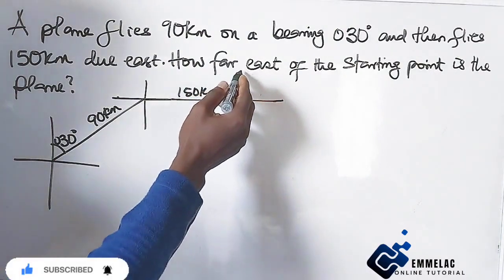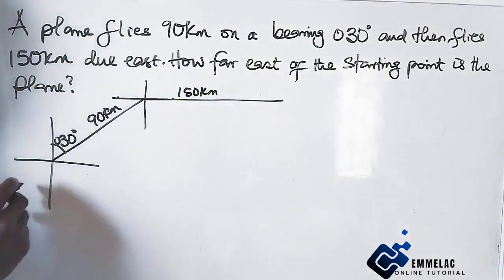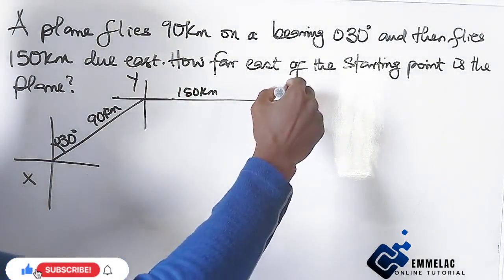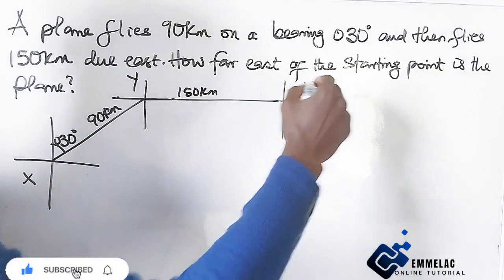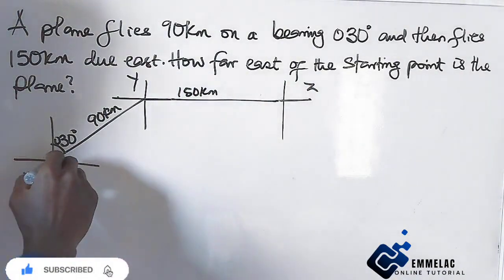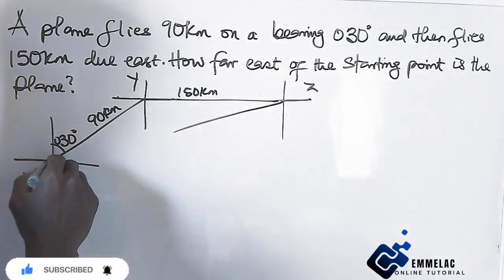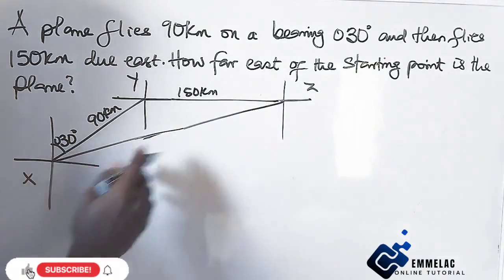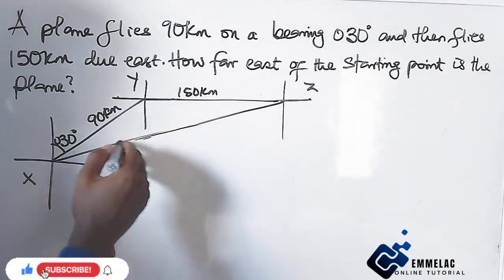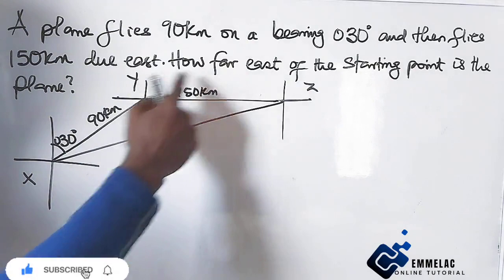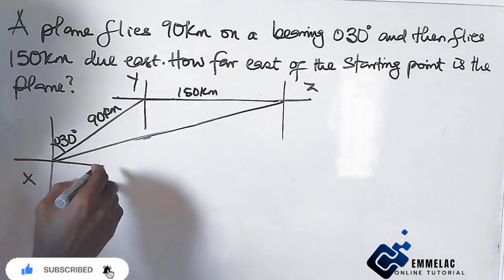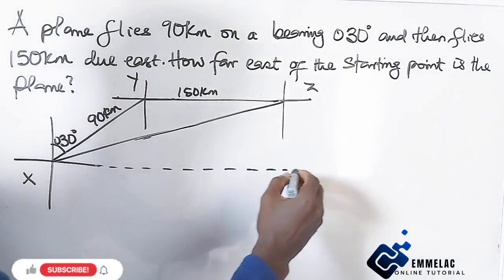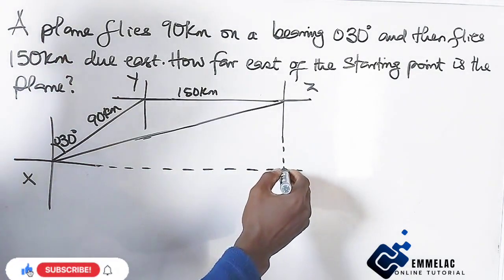Now how far east of the starting point? Here is the starting point. Let us give this one X, I give this one Y, and let us give this one Z. So our starting point, we connect this down to this. Here is our east here.